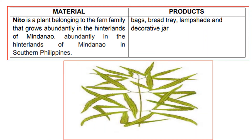Another material is danito. It is a plant belonging to the fern family that grows abundantly in the hinterlands of Mindanao. It can be produced into bags, bread trays, lampshades, and decorative jars.